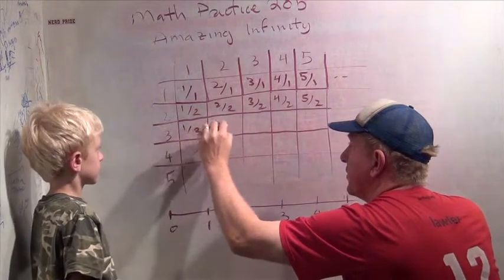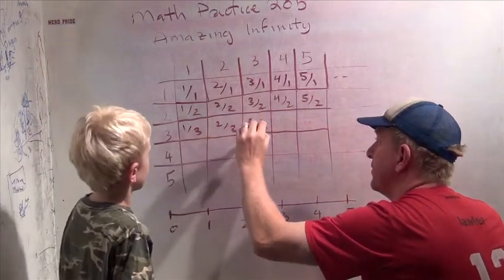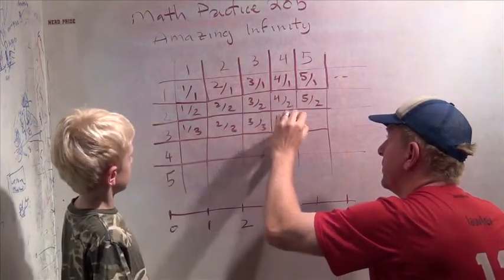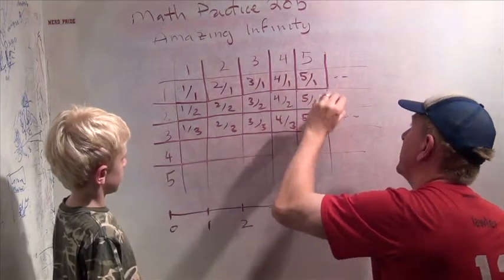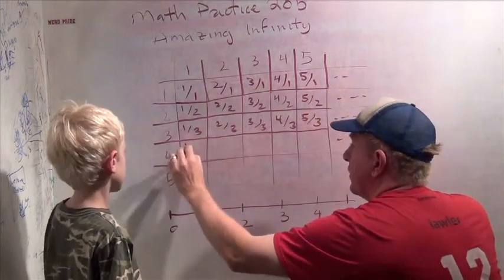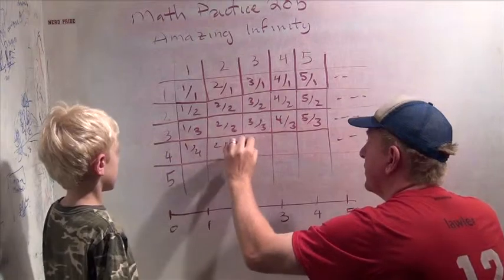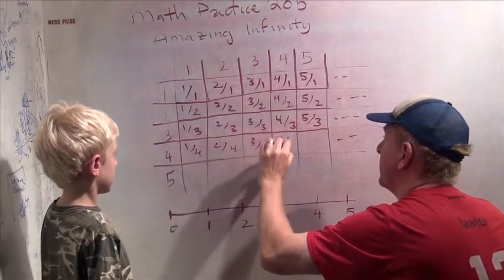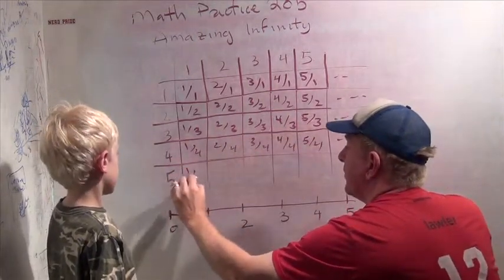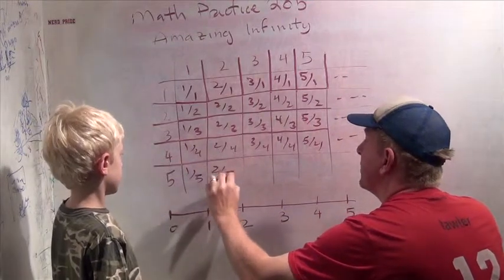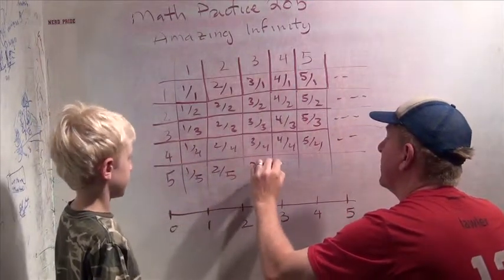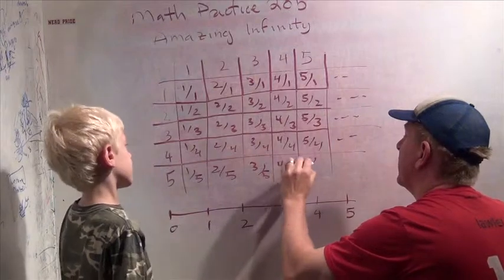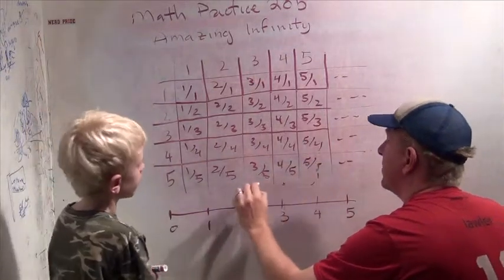1 over 3, 2 over 3, 3 over 3. What's 3 over 3? 1. 4 thirds, 5 thirds, and then these are all, etc. 1 fourth, 2 fourths, 3 fourths, 4 fourths, 5 fourths. 1 fifth, 2 fifths, 3 fifths, 4 fifths, 5 fifths, etc, etc, etc.